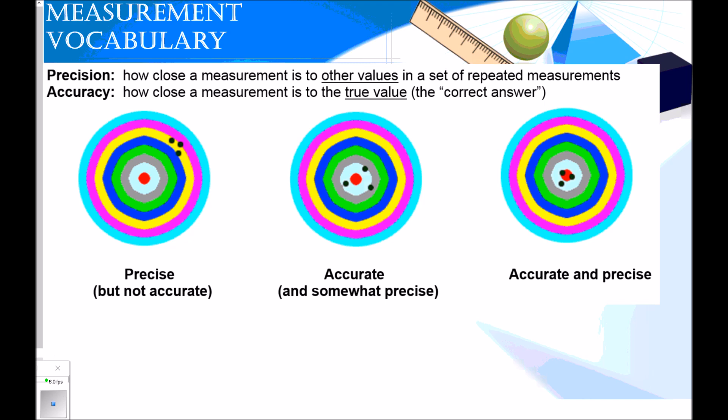In the middle one here, we would say that this person is very accurate. So they accurately hit the bullseye area, but it's not very precise because they're not really close together. And then our last one, this is perfect. We would say it's accurate and precise because it's both close together and in the region that we want it to be in.